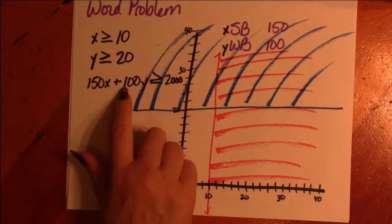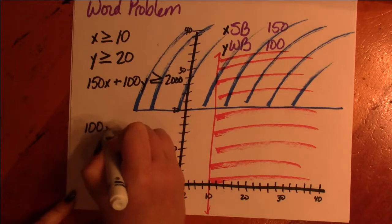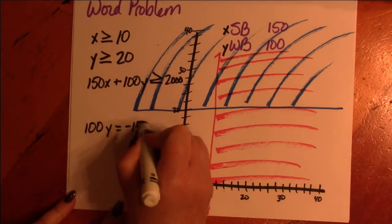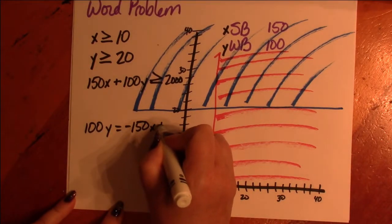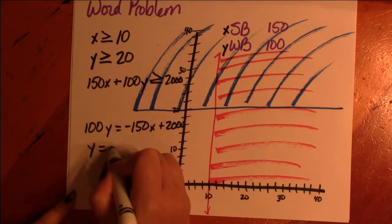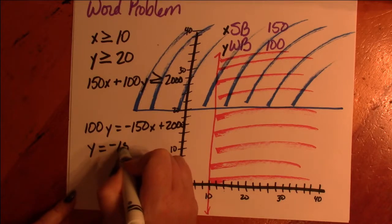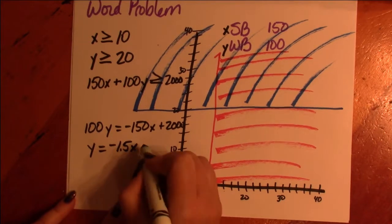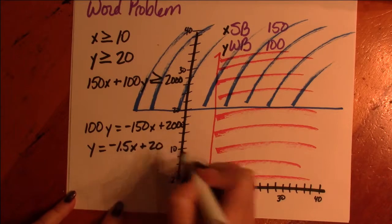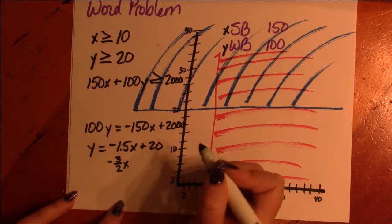And then we have to graph this line. 100Y equals negative 150X plus 2,000. Y equals negative 1.5X plus 20. Negative 1 and a half, that's 3 halves X.